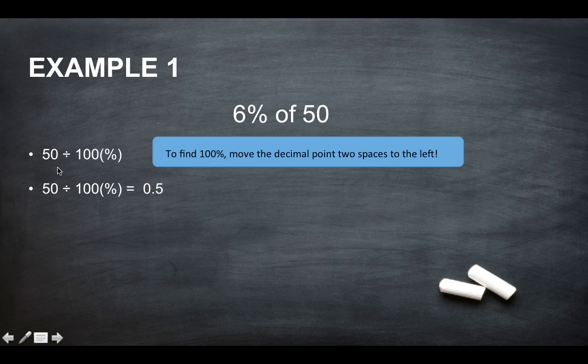Think of the decimal point being at the very end of the number which would be there. 1, 2 spaces would go there and then you would just fill in the gaps with a 0. So we've got 0.5. Then you would do 0.5 times 6, which is the percentage you're trying to work out.